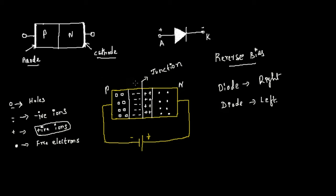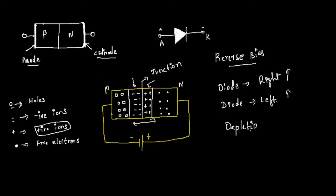The negative ions have moved away from the junction line, as you can see, because of the reverse applied EMF. Reverse biasing is happening now, so they are moving away from the junction. As a result, the size of the depletion layer is now increasing — the depletion region is getting broader and broader.